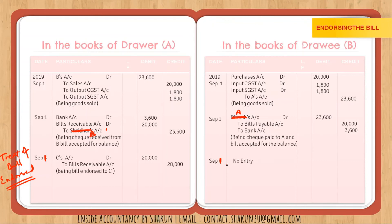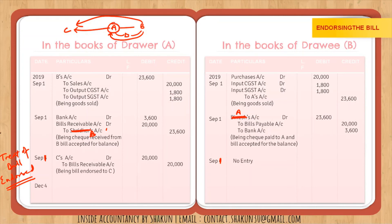On the date of maturity — December 4 — A is not in the picture. B pays C directly. So in the books of A, no entry is passed for receiving cash on the date of maturity. In the books of B: Bills Payable account Dr to Cash or Bank — 20,000, being payment made against the bill.